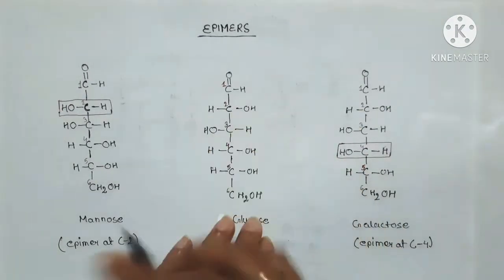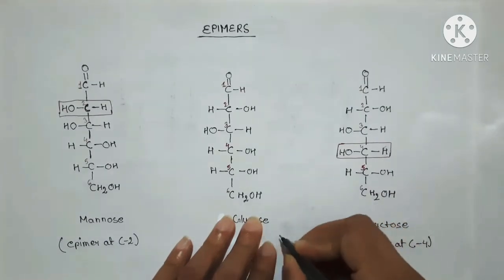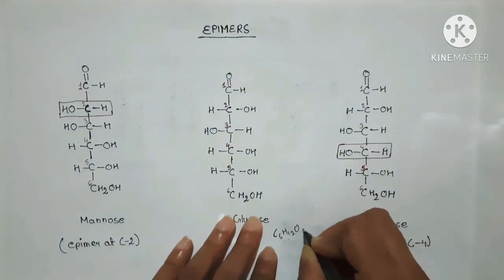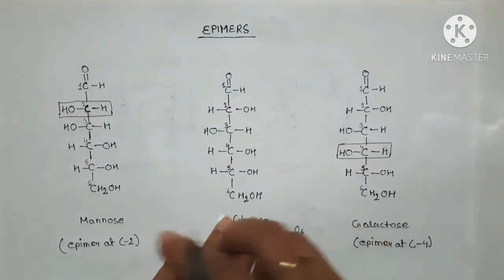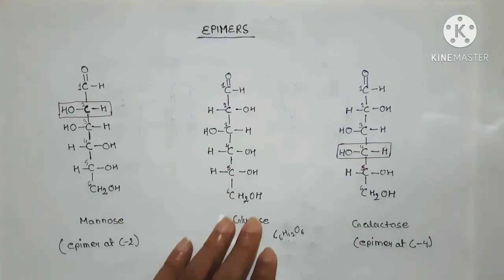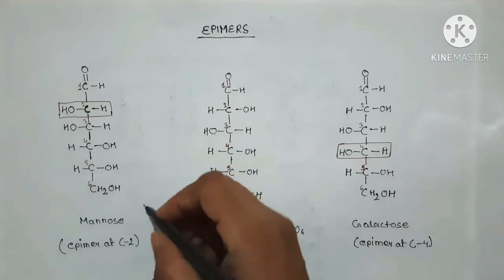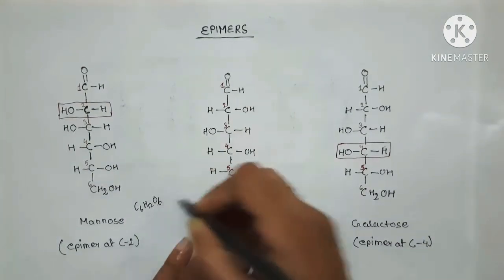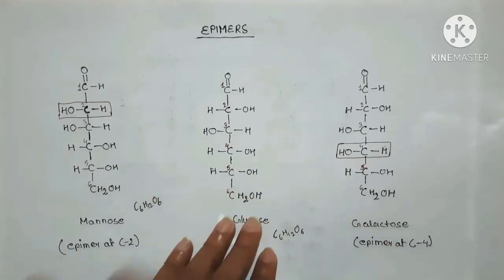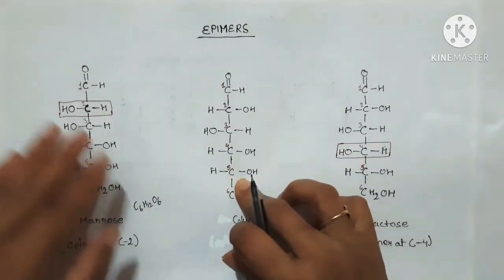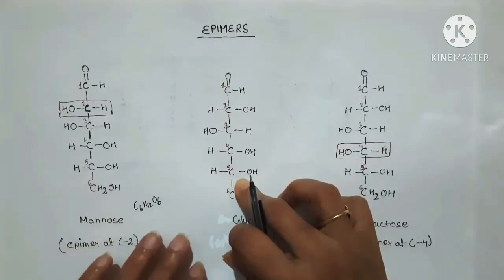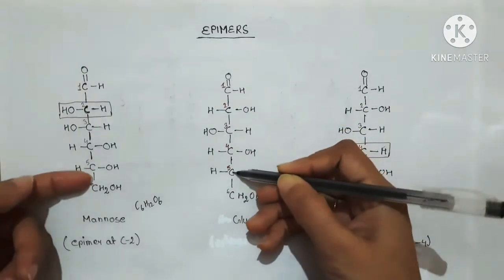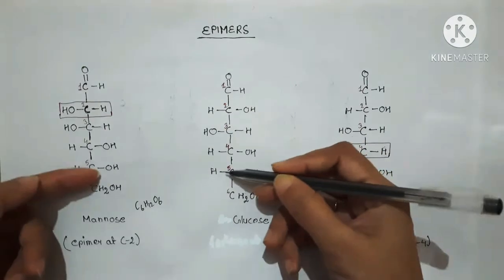The chemical formula of glucose is C6H12O6. Its epimer, mannose, has the same chemical formula C6H12O6, but you can see that there is a difference in the structure.